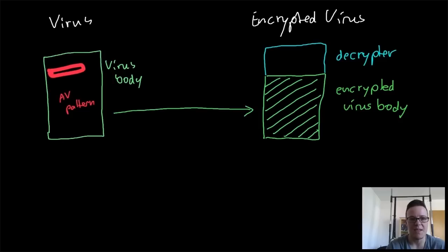The antivirus will usually put a pattern on the virus body if it's not encrypted. With the encrypted virus, the antivirus product can still use a pattern but put that on the decryptor.